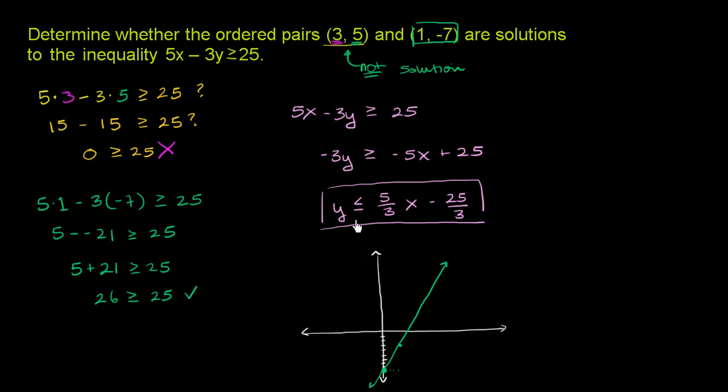That's if it was y is equal to 5 thirds x minus 25 over 3. But here we have an inequality. It's y is less than or equal to. So for any x, the y's that satisfy it are the y that equals 5 thirds x minus 25 over 3, that would be on the line, and all the y's less than it. So the solution is this whole area right over here. Since it's less than or equal to, we can include the line. And less than tells us we're going to go below the line.